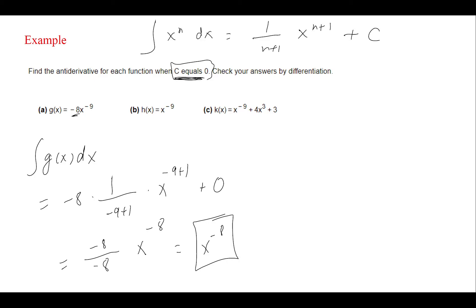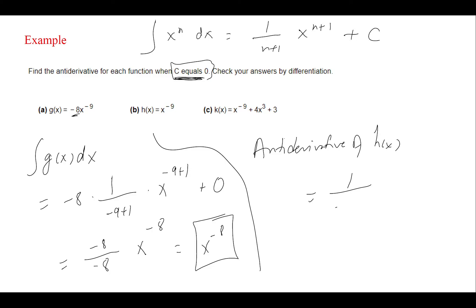For h of x, using the same power rule: the antiderivative is 1 over (9 plus 1) times x to the power (negative 9 plus 1), with C equal to zero. This gives negative 1 over 8 times x to the power negative 8, which can be rewritten as negative 1 over (8 x to the power 8) using a positive exponent.